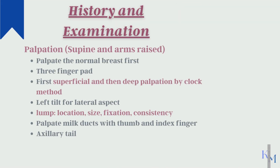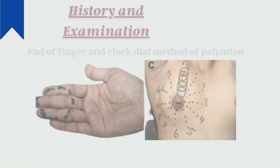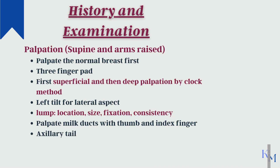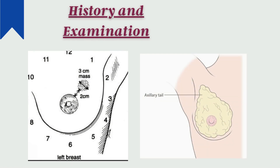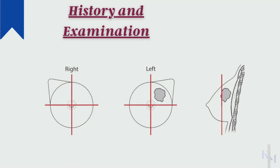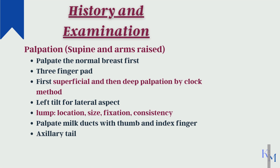Next is palpation of a lump. Ask her to lay down and place a pillow under the scapula. Use a three-finger pad to palpate the breast, usually in a clockwise manner. Start with the normal breast, then palpate the one with the abnormality. If a lump is present, measure its dimensions, location, mobility, and firmness. We can never assess whether a lump is malignant or benign by clinical exam alone, so further assessment is always necessary. Then palpate the milk ducts with thumb and index finger and the axillary tail.